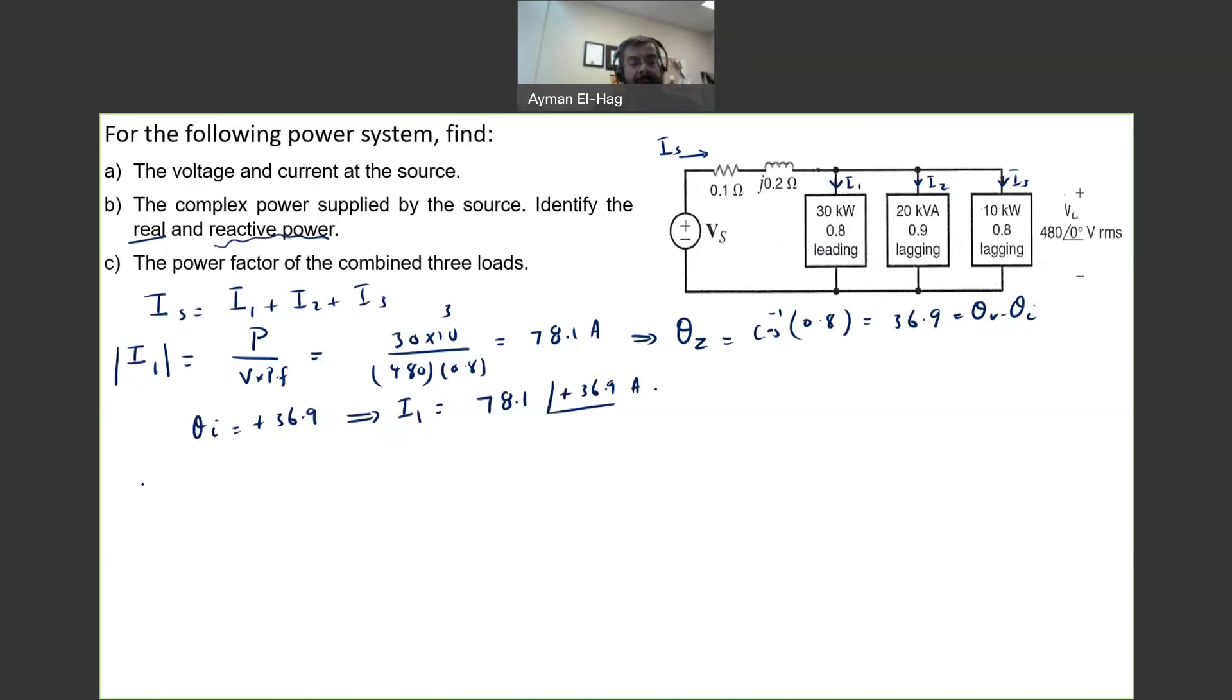And now we'll move on and find I2. As we know, S is equal to V times I. And S here has a magnitude, or we call it the apparent power. So the V and the I are also magnitude only. So your I2 is equal to S2, which is 20 times 10 to the power of 3, divided by the 480. And this is equal to 41.6 amps. Now, for the angle, it is 0.9. So theta Z or theta V minus theta I is equal to cosine inverse of 0.9. And this is equal to 25.8.